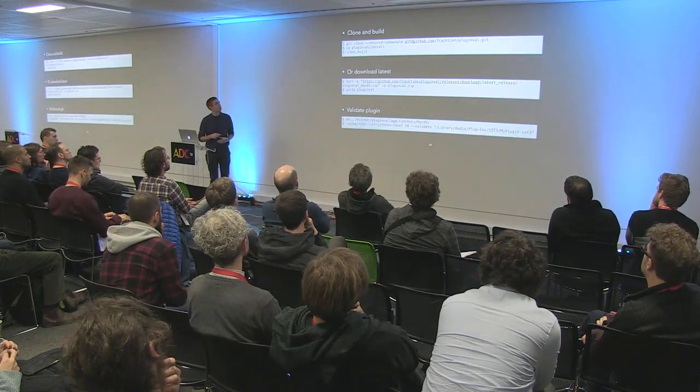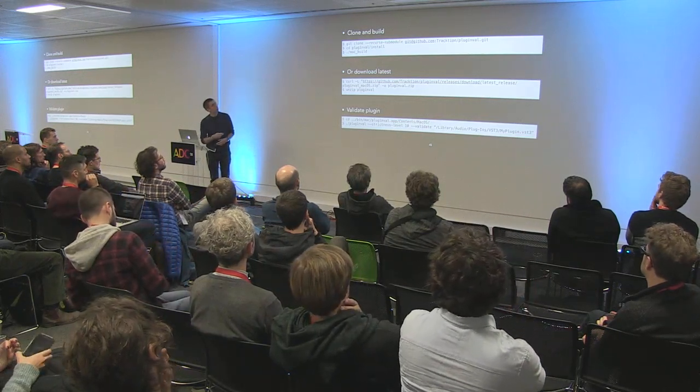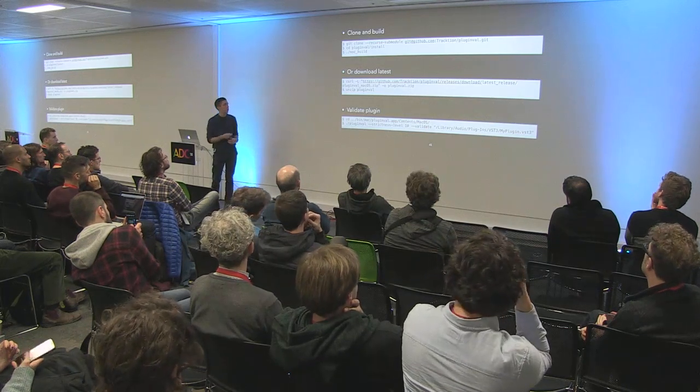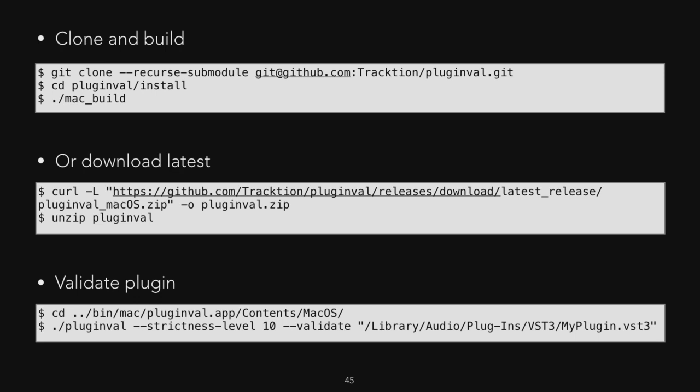To add a test to the list you simply create a static instance of it. Getting Plug-in Valve is easy: it's on GitHub with master and develop branches like JUCE itself, it's a one-liner to clone including JUCE as a git submodule, and there are scripts to build and test. We have versioned binaries so you can always get a specific version, and a URL for the latest binary. To validate: clone with --recurse-submodules, cd into the directory, run the platform script, download the binary with curl or PowerShell, then call the binary with an optional strictness level — 5 is the default — and the --validate flag with paths to your plugins.